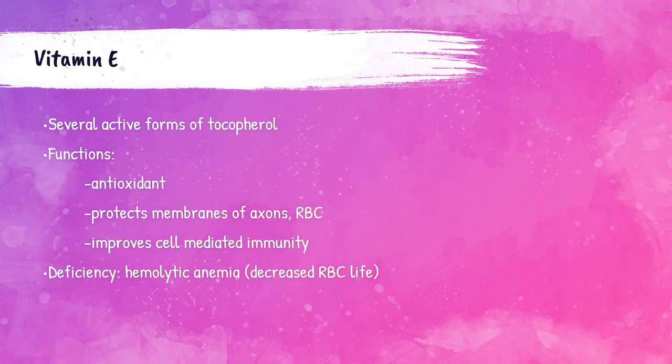Vitamin E, or tocopherol, is a fat-soluble vitamin that serves primarily as an antioxidant. It also helps with cell-mediated immunity and protects membranes of axons and the red blood cells. A deficiency of vitamin E leads to a decreased life of a red blood cell, leading to hemolytic anemia. I will talk more about hemolytic anemia in my hematology lectures.